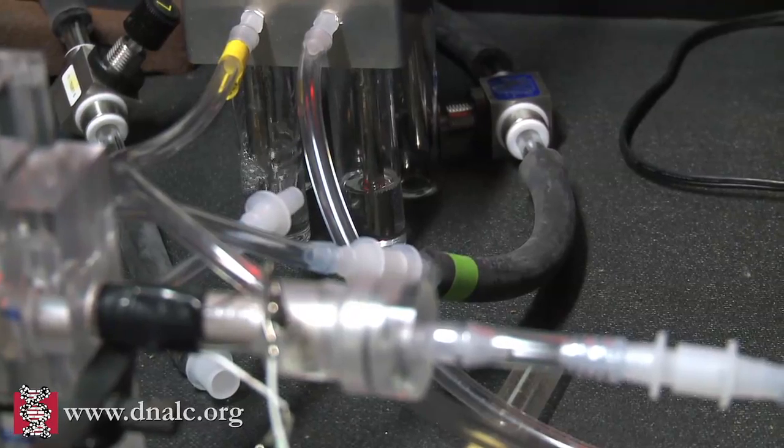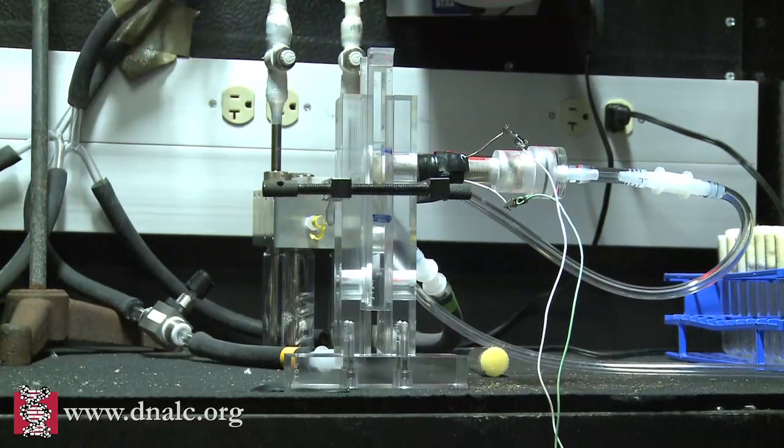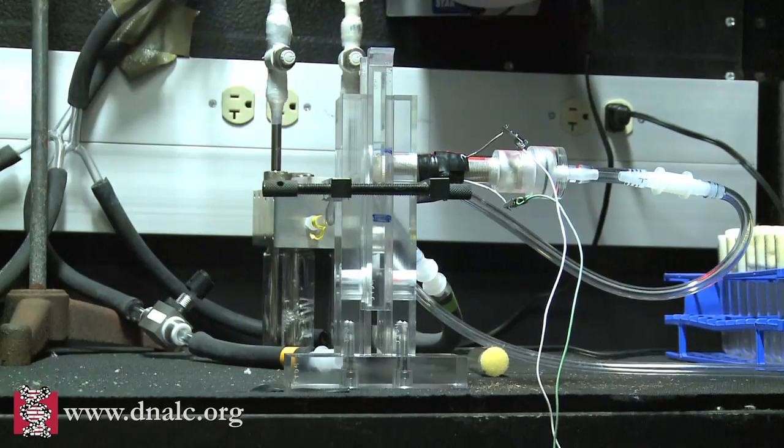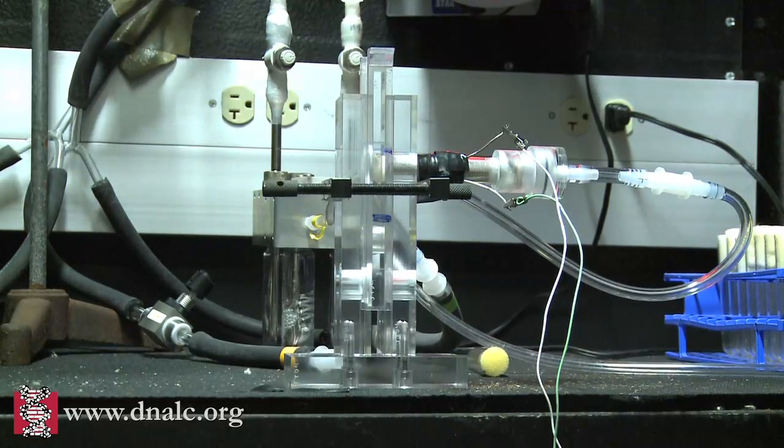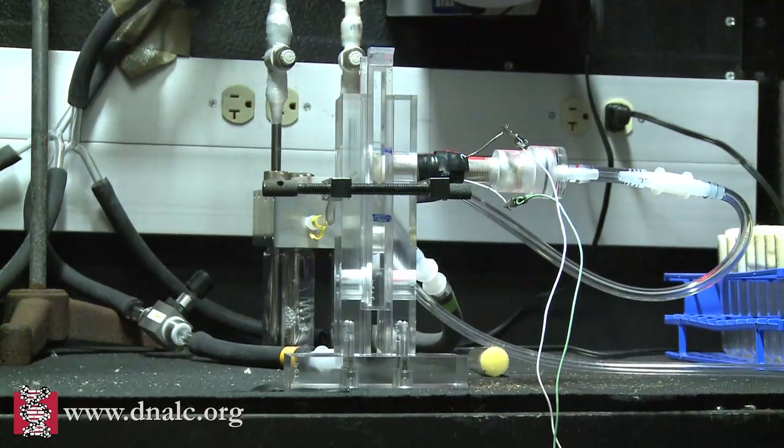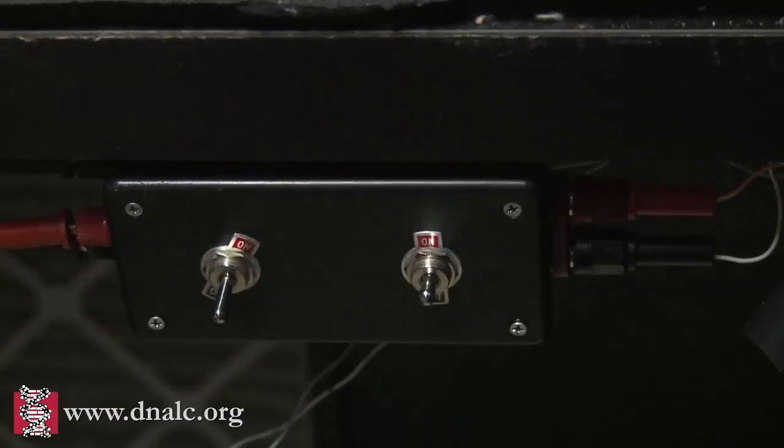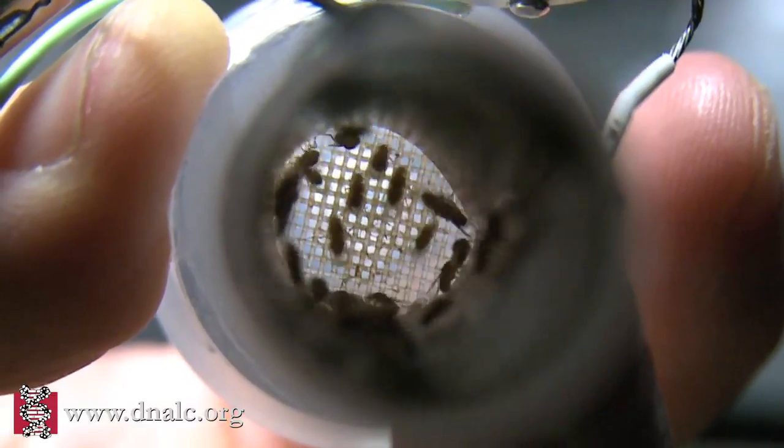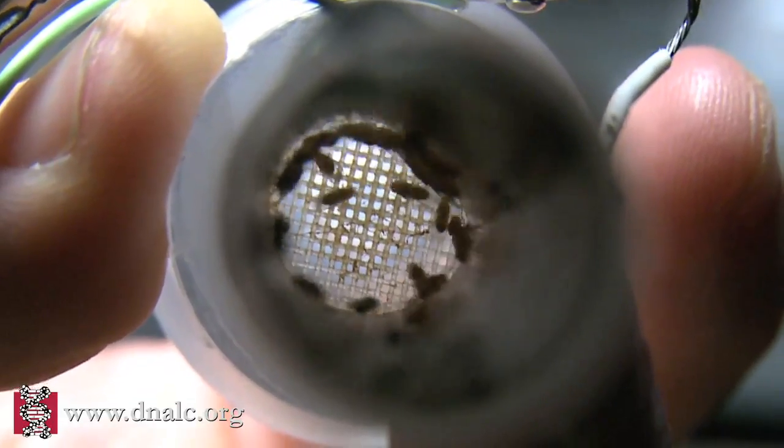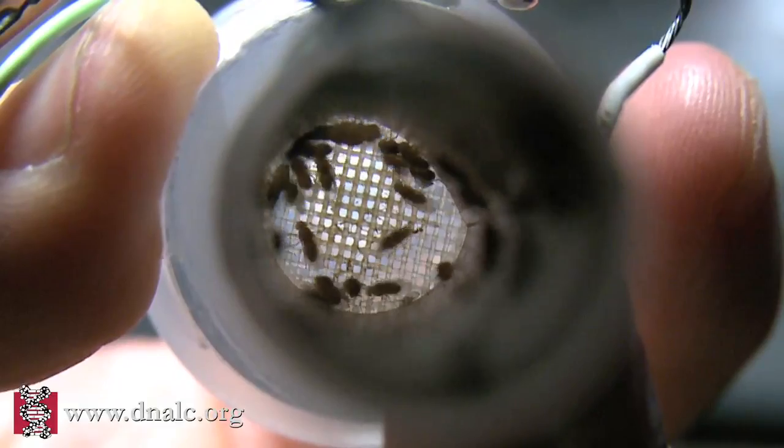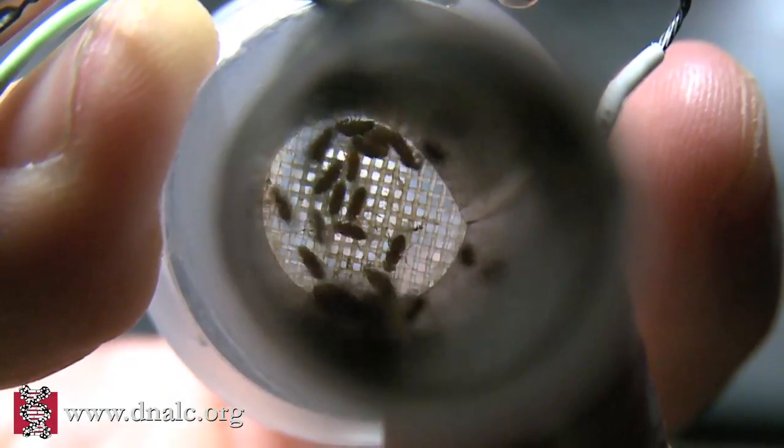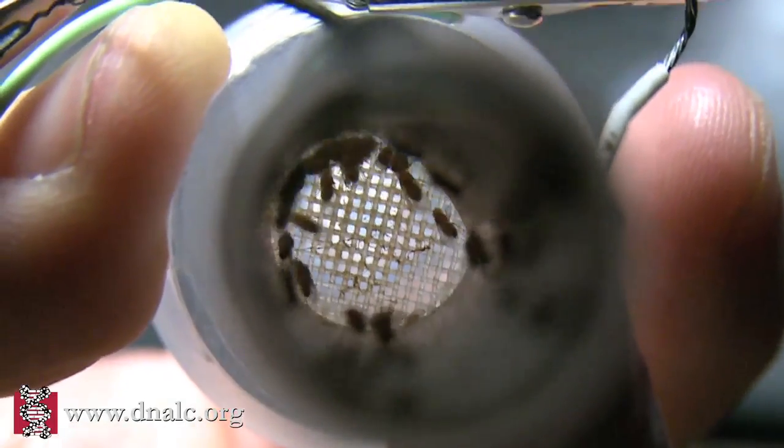The flies are sequentially exposed to one odor, OCT, which smells a little bit like licorice. While they smell the licorice-y smell of OCT, they receive an electric shock delivered through the wires. They don't like the electric shock—it's painful to them, and they jump whenever they feel it.